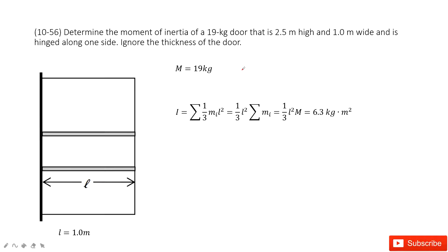In this chapter, we talk about rotational motion. We need to find the moment of inertia for this door. The mass of the door is given, and this door is 2.5 meters high and 1 meter wide.